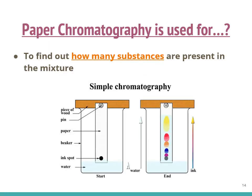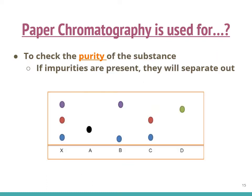When can we use paper chromatography? Paper chromatography can be used to find out how many substances are present in a mixture. For example, in this picture we have the separation of an ink spot, and by the end of the process we can see that the ink spot has been separated into different types of substances. We can also use paper chromatography to check the purity of a substance — if impurities are present, they will separate out.